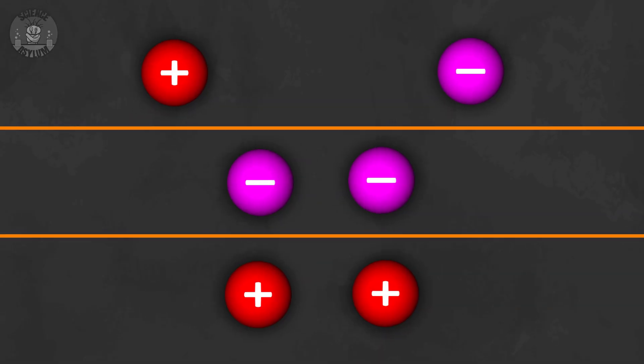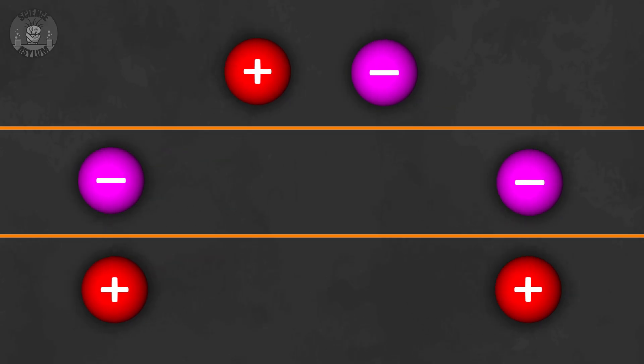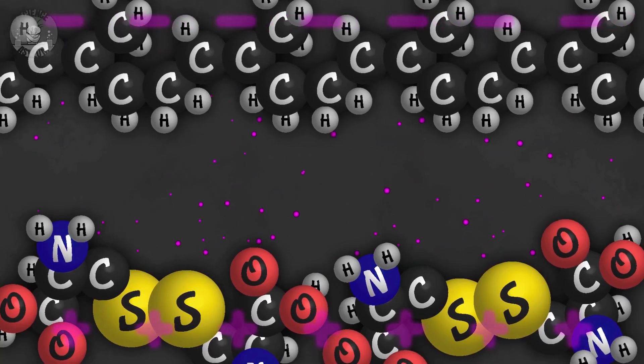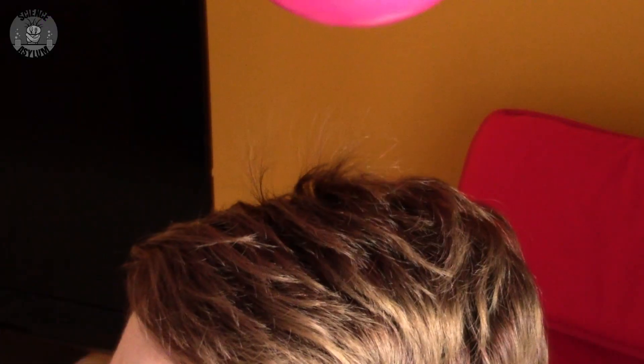Opposite charges attract and like charges repel, which is pretty common knowledge. That's what makes atoms the way they are — the protons are positive and the electrons are negative, so they're attracted to each other. Since electrons are the things that move around and electrons are negative, we kind of have to think backwards. An electron gain makes an object negative and an electron loss makes an object positive. The balloon gained electrons from the hair, so it became negative and the hair became positive.